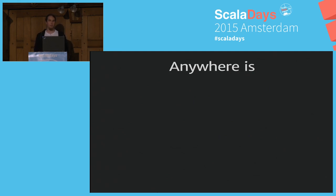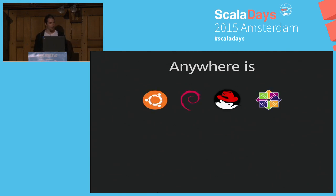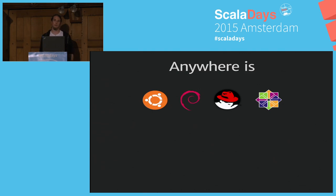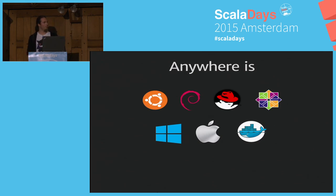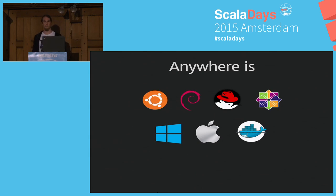So SBT Native Packager — what do we mean by 'anywhere'? Well, it's a flexible name. We support all Ubuntu and Debian derivatives, so you can build packages to install. We support RPM, Fedora, and CentOS. We support MSI, so you can create Windows installers. You can also create DMG packages for Mac, and since our recent version, app packages as well. And you can create Docker images. This is what 'anywhere' means for SBT Native Packager at the current stage.